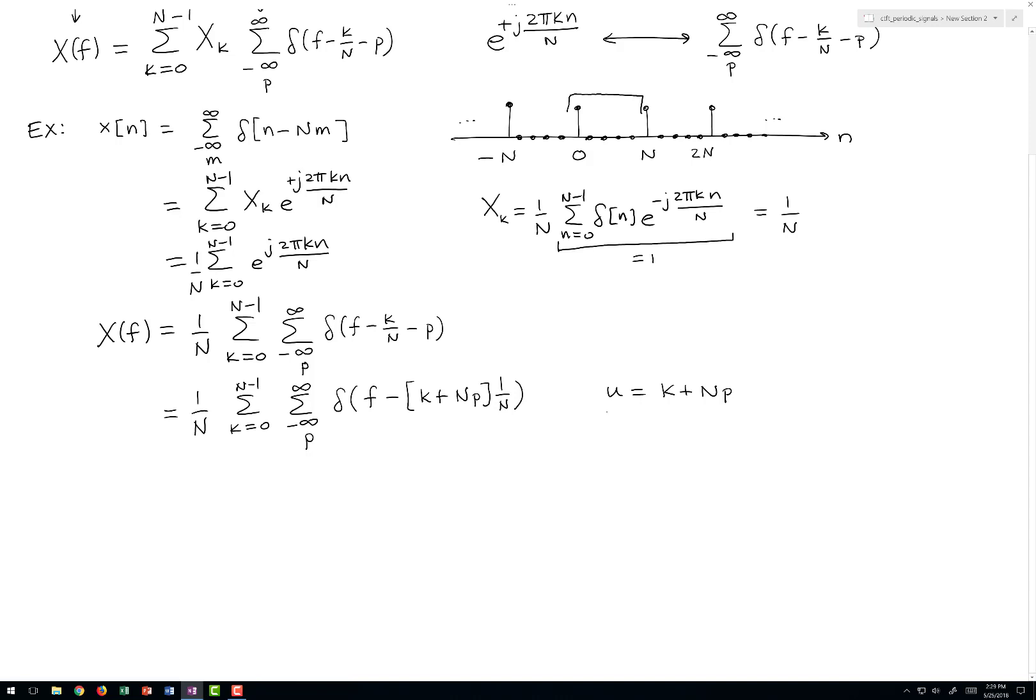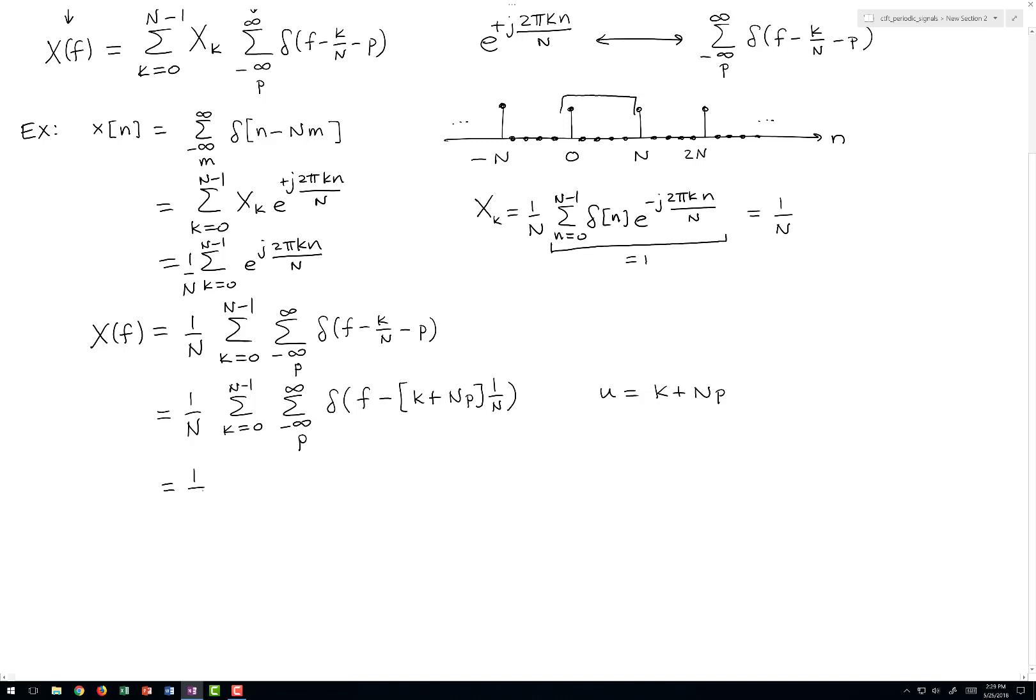u takes on values over all integers. So we can simplify this expression by writing a sum from minus infinity to infinity on u, just a single sum now, delta f minus u over N.